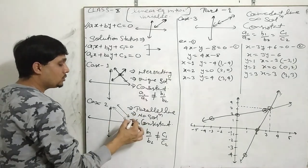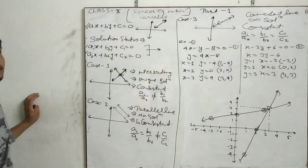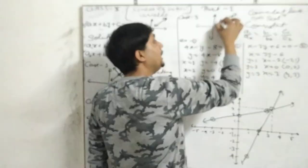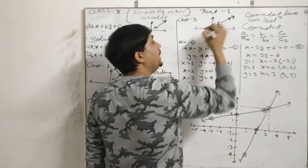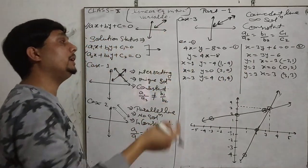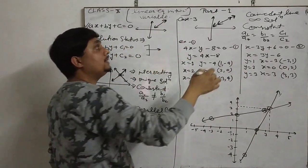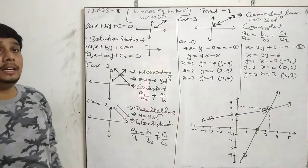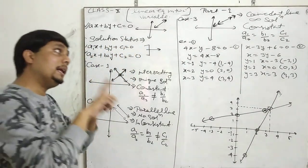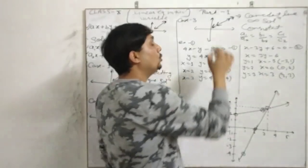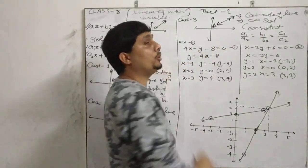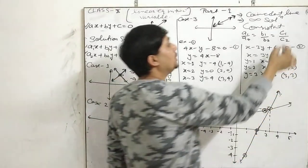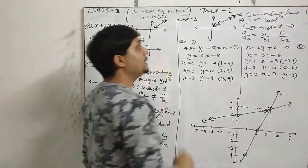The second case is no solution — this is called inconsistent. The third case is where two lines overlap, meaning both lines lie on one another. These are called coincident lines. Coincident lines have infinite solutions and we call it consistent.